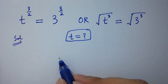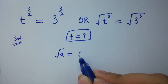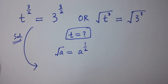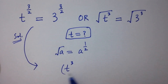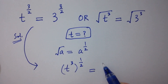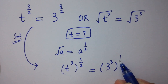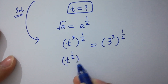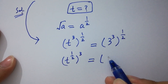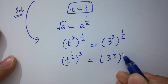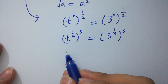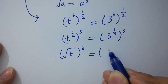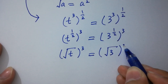As we know, square root of a equals a to the power half. Then t to the power 3, to the whole power half, equals 3 to the power 3, to the whole power half. Which is the same as t to the power half, to the whole power 3, equals 3 to the power half, to the whole power 3. This can be written as square root of t, to the whole power 3, equals square root of 3, to the whole power 3.